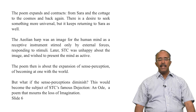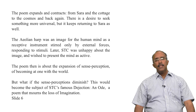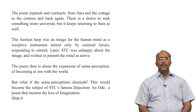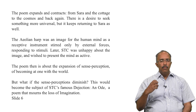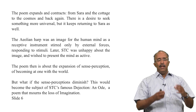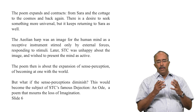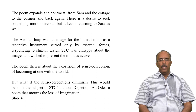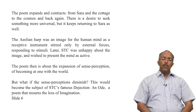The poem expands and contracts — from Sarah and the cottage to the cosmos and back again. There is a desire to seek something more universal, but the speaker keeps returning to Sarah. The Aeolian harp in Coleridge is an image for the human mind — a receptive instrument, molded, moved, affected by external forces, primarily nature. However, in his later work, Coleridge was not happy with this because he began to believe that in the Aeolian harp image the mind is rather passive — the mind waits for something to affect it. He wanted something more active, the mind as active and dynamic.